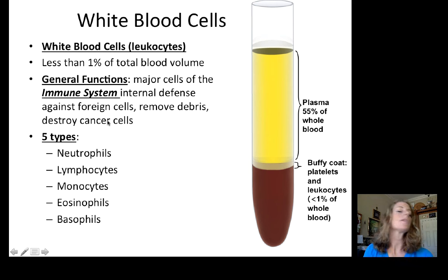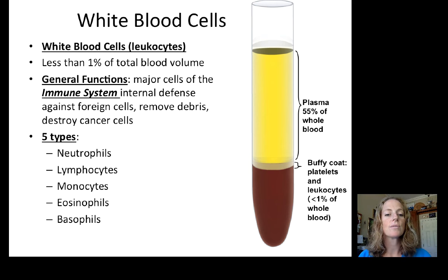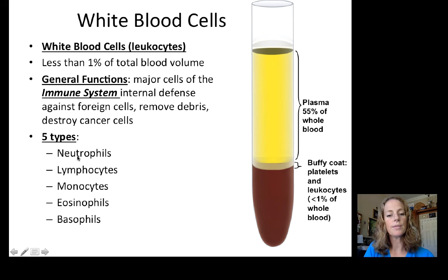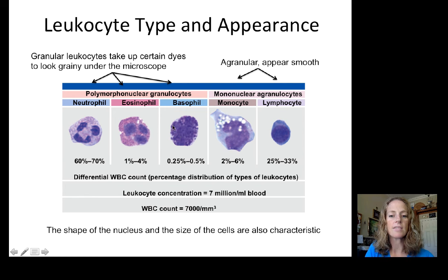White blood cells, also called leukocytes, are less than 1% of total blood volume but are extremely important for internal defenses and the immune system. Their general functions include defense against foreign pathogens such as bacteria, viruses, and parasites; removing debris; and destroying cancer cells. There are five types: neutrophils, lymphocytes, monocytes, eosinophils, and basophils. Neutrophils, eosinophils, and basophils are granular when stained.